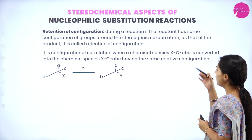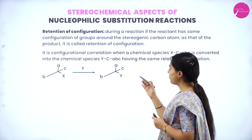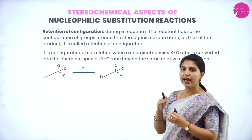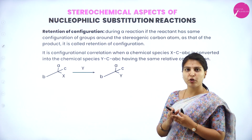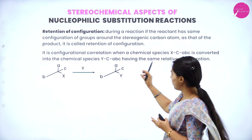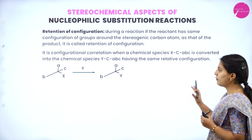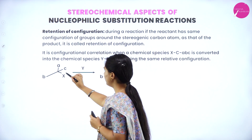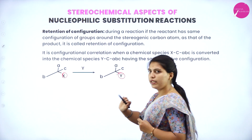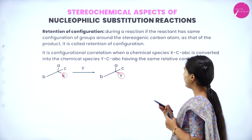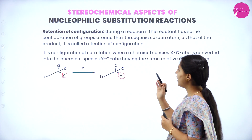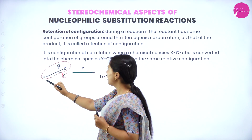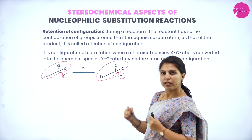Retention of configuration: during a reaction, if the reactant has the same configuration of groups around the stereogenic carbon atom as that of the product, it is called retention of configuration. The stereogenic center has the same configuration in both reactant and product. It is a configurational correlation when a chemical species X-C(A,B,C) is converted into Y-C(A,B,C) having the same relative configuration. The overall configuration around the product is the same as the reactant — this is called retention of configuration.